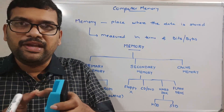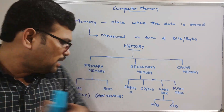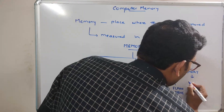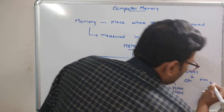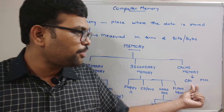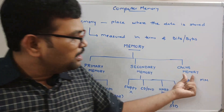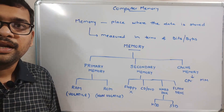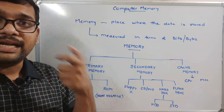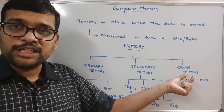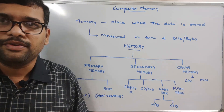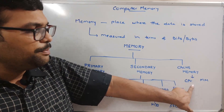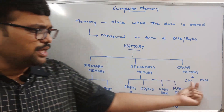Cache memory is the memory situated between the CPU and main memory. Whenever the processor wants to get data, the frequently used data can be stored in cache memory to get a fast response. If data needs to be executed, it is searched first in cache memory. If available in cache, it is retrieved directly to the processor, otherwise it is fetched from main memory.